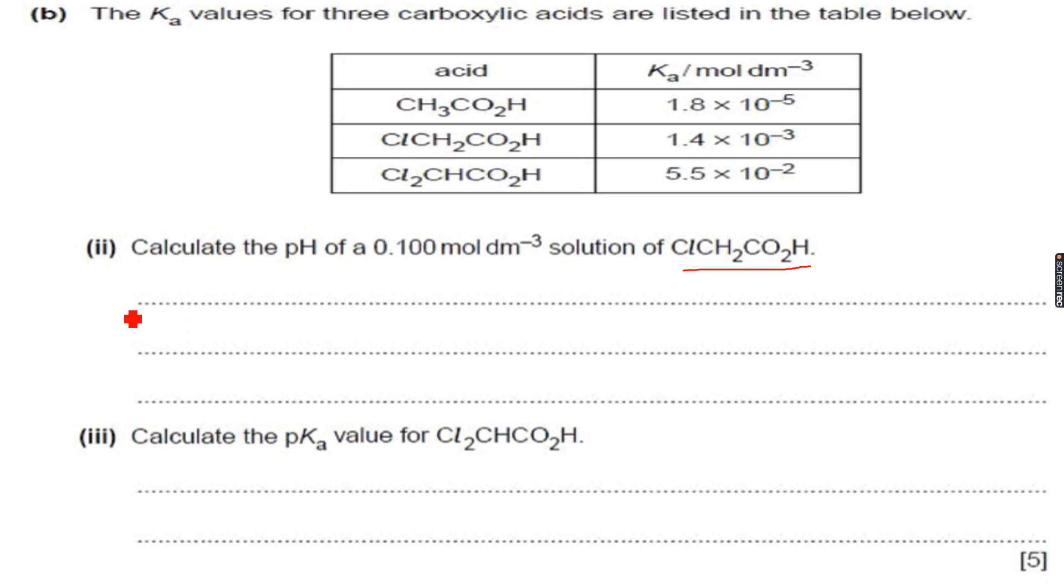So first of all what we will do is we will write the formula for the acid dissociation constant. Ka is equal to H plus times the Cl, CH2, CO2 negative ion over the concentration of Cl, CH2, CO2H.